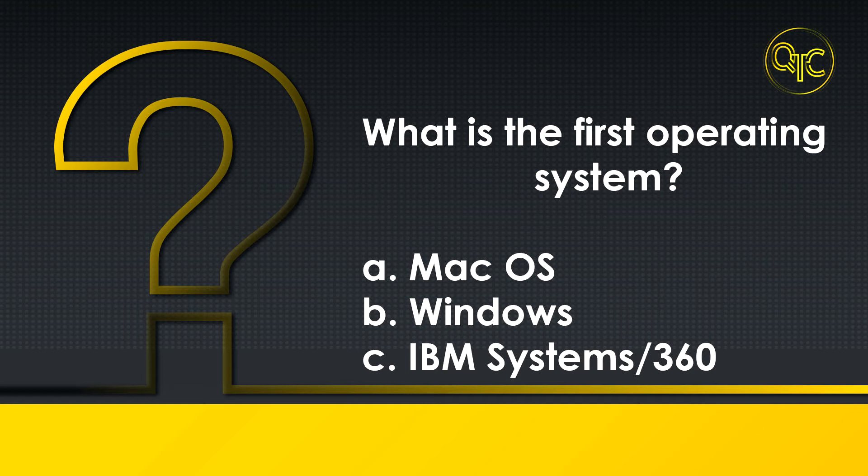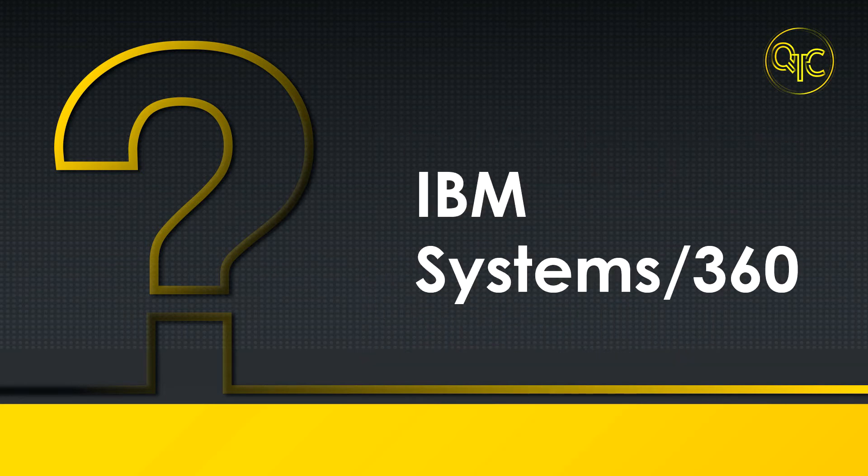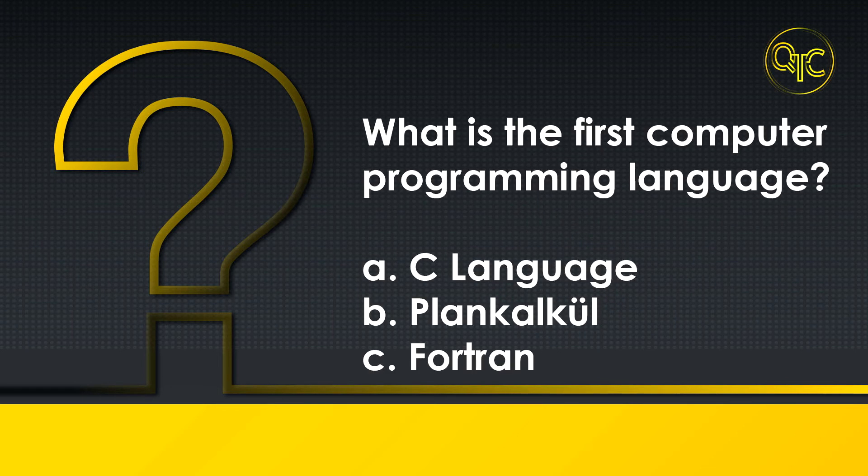Number four question: what is the first operating system? A) Mac OS, B) Windows, C) IBM Systems/360. The answer is IBM Systems/360.